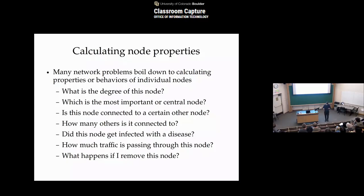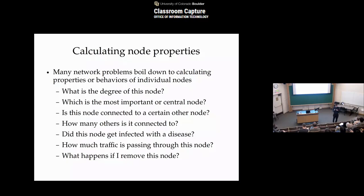I'm going to talk about these message passing techniques for calculating things on networks. What we focus on initially is calculating properties of individual nodes: what is the degree of this node? What is the most important node in the network? How much traffic is passing through this node? Does this node get infected with a disease? What happens if I remove this node from a network? These are all questions about individual nodes. This large class of questions can be tackled using techniques that originally come from condensed matter physics, originally pioneered by Hans Bethe and Rudy Peierls in the 1930s and 40s.